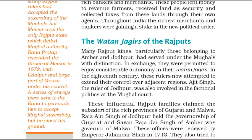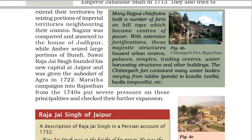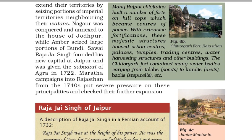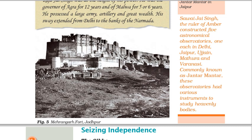Many Rajput rulers had accepted the suzerainty of the Mughals, but Mewar was the only Rajput state which defied Mughal authority. Rana Pratap ascended the throne at Mewar in 1572, with Udaipur and a large part of Mewar under his control. A series of envoys were sent to the Rana to persuade him to accept Mughal suzerainty, but he stood his ground. Raja Jai Singh of Jaipur — described in a Persian account of 1732 — was at the height of his power: he was the governor of Agra for 12 years and of Malwa for 5 or 6 years, possessed a large army, artillery and great wealth, and his sway extended from Delhi to the banks of the Narmada.